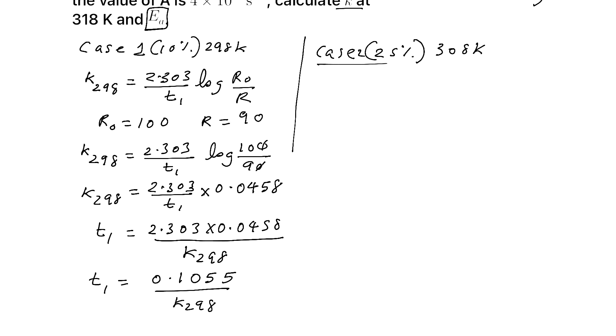So t1 is equal to, you have to multiply 2.303 × 0.0458, you will be getting 0.1055 by k × 298. Similarly, you can find k for case 2, k at 308 Kelvin. So 2.303 by t2 log. See here, 25% is completion. Initial concentration is 100, final concentration, 25% completion means 100 minus 25, that is 75. So you can cut this with 25, 4 by 3, log 4 by 3.